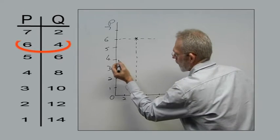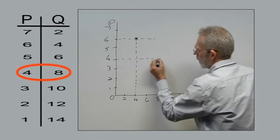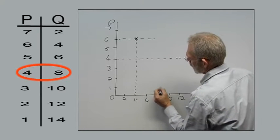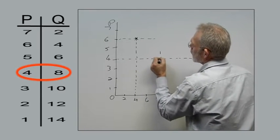Similarly, at a price of 4, quantity demanded is 8. And we have another point.